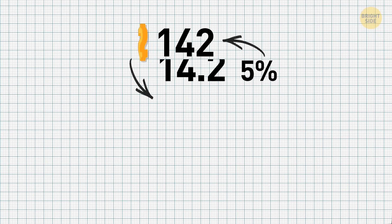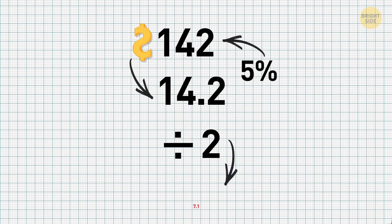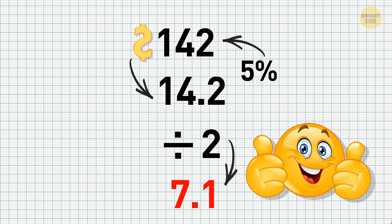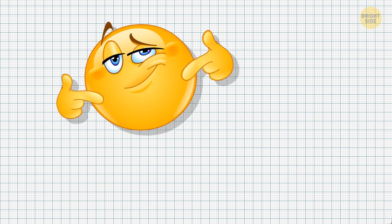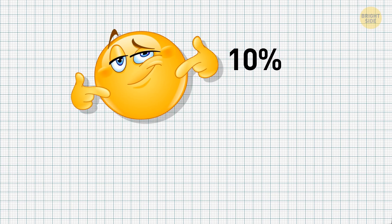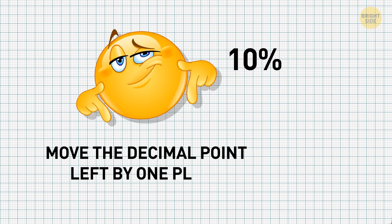First, move the decimal point left by one digit, which would give you 14.2. Now, divide this number by 2, and you'll get 7.1, which is also the answer to your question. The principle is simple. Finding 10% of any amount is easy, because you only need to move the decimal point left by one place, which we did in our first step. And 5% is 10% divided by 2, right? So, that's why we divided the resulting sum by 2 as well.